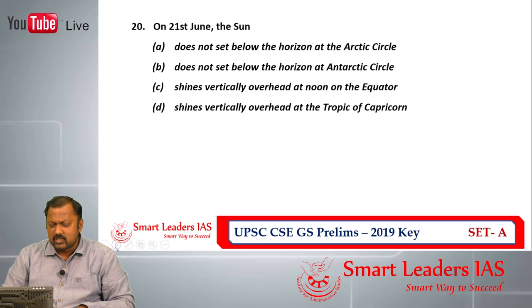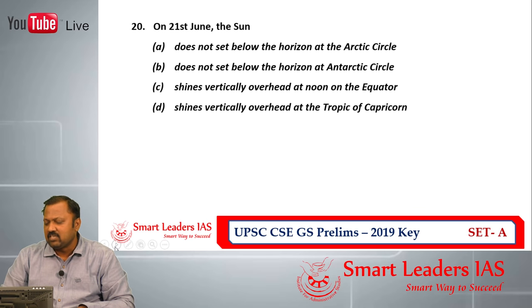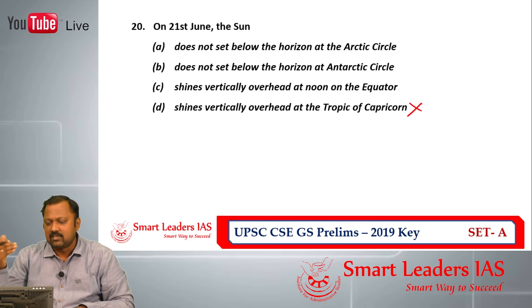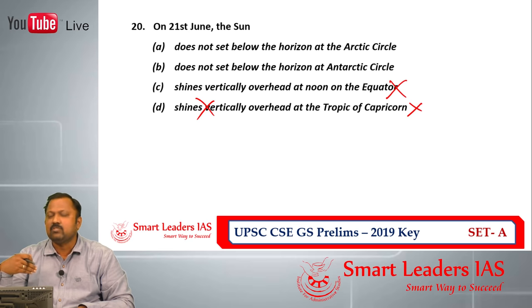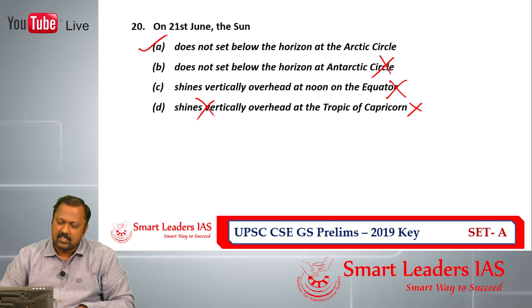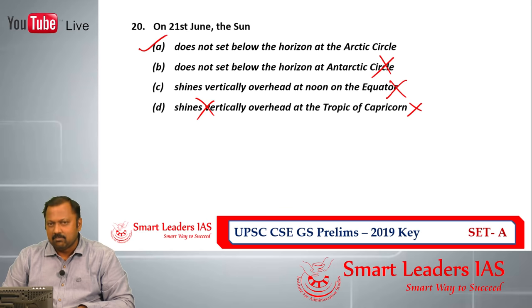Question number 20: on the 21st June, the sun does not set below the horizon at the Arctic Circle. We can easily eliminate a few answers. The sun shines vertically over the Tropic of Capricorn — that is wrong, because on 21st June the sun shines vertically over the Tropic of Cancer in the northern hemisphere. The option stating the sun does not set below the horizon at the Antarctic Circle is also wrong, because for that the sun would need to be in the southern hemisphere. So the answer is A — it does not set below the horizon at the Arctic Circle. That is why in the Arctic Circle there are 6 months of daylight during summer, when the northern hemisphere is facing towards the sun.